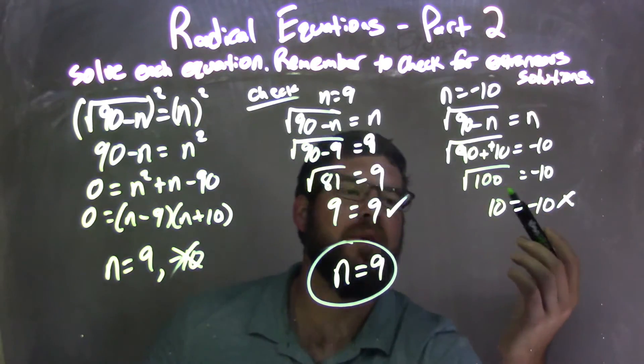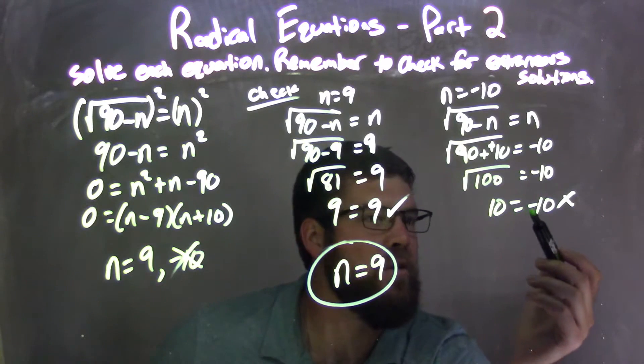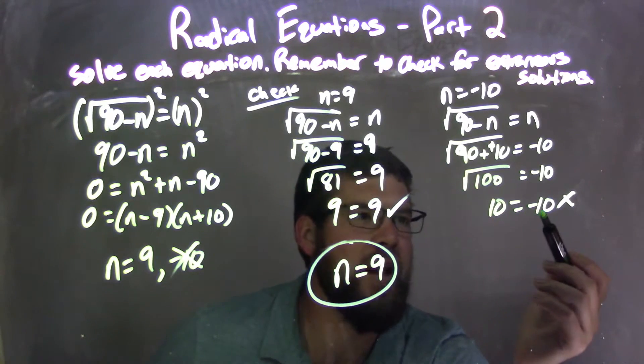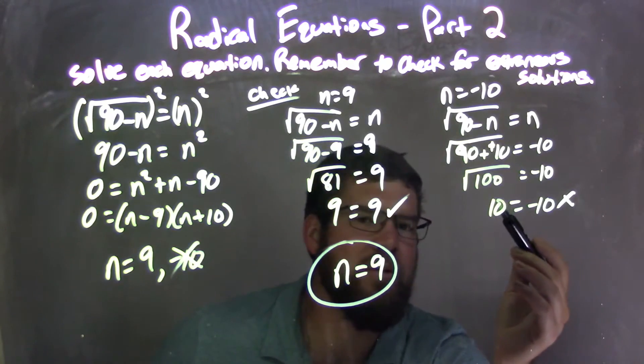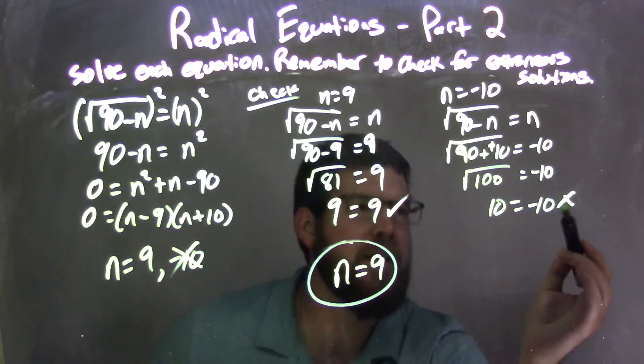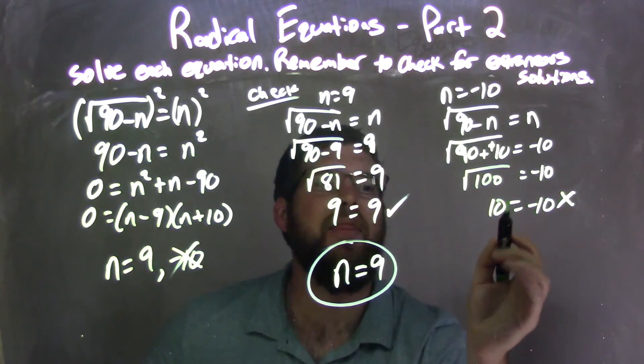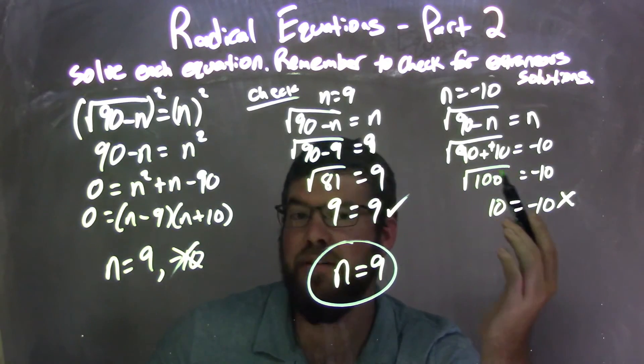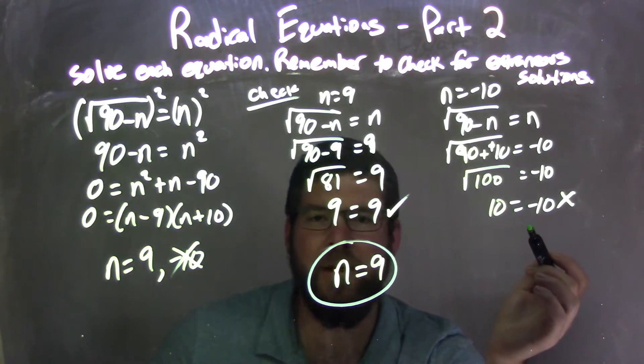Did the same thing with negative 10, though. And when we did that, when we simplified, we had 10 equals a negative 10. 10 equals negative 10. And what that caused here, well, they're not equal. Not equal. So since they're not equal, that is an extraneous solution. Negative 10 is an extraneous solution, because the left and right-hand side are not equal.